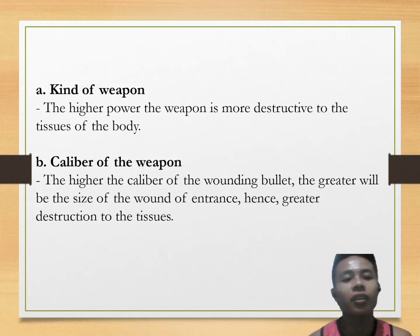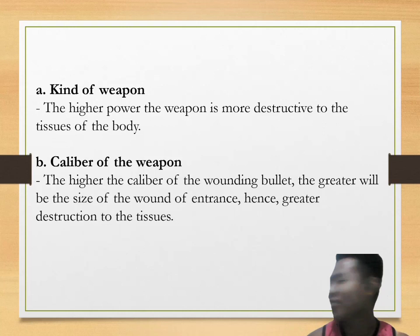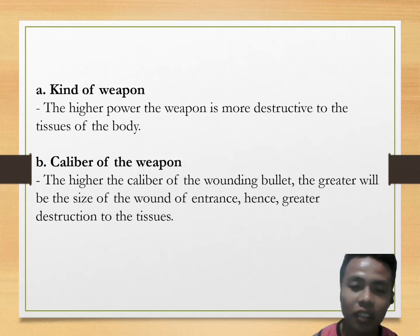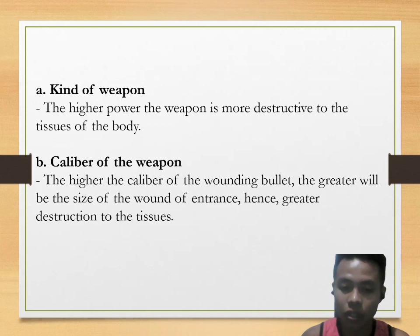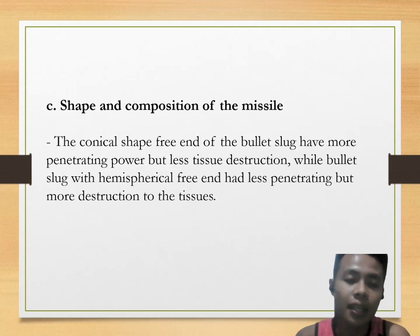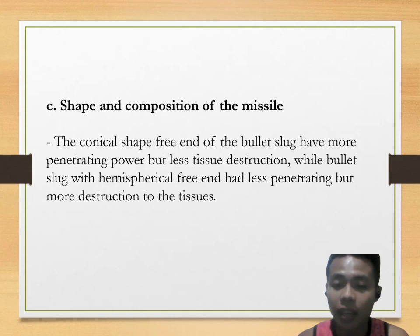Factors influencing entrance and exit gunshot wounds: Kind of weapon — the higher the power of the weapon, the more destructive it is to the tissues of the body. Caliber — the higher the caliber of the wounding bullet, the greater the size of the wound of entrance and the greater the destruction to the tissues. Shape and composition of the missile — conical-shaped bullet ends have more penetrating power but less tissue destruction, while bullets with hemispherical ends have less penetrating power but more destruction to the tissues.